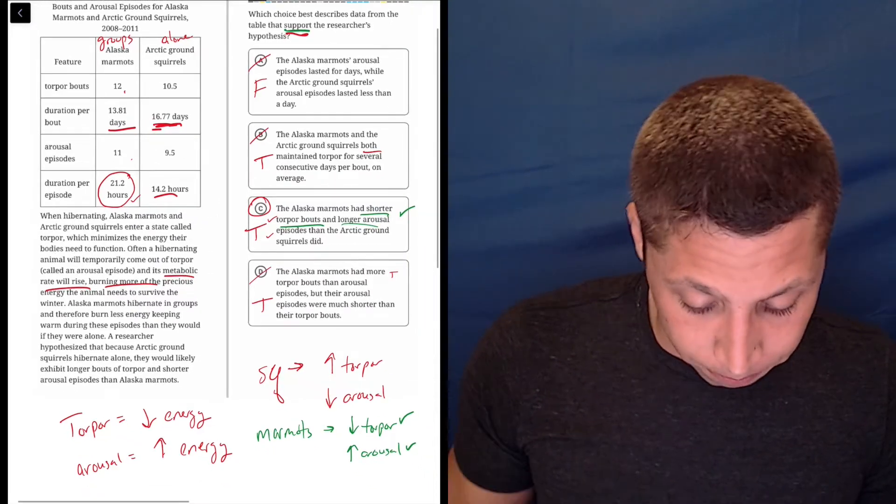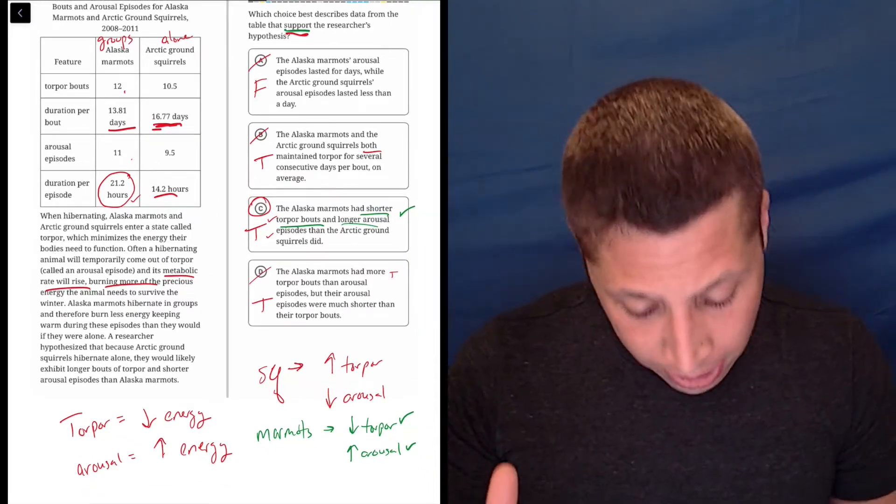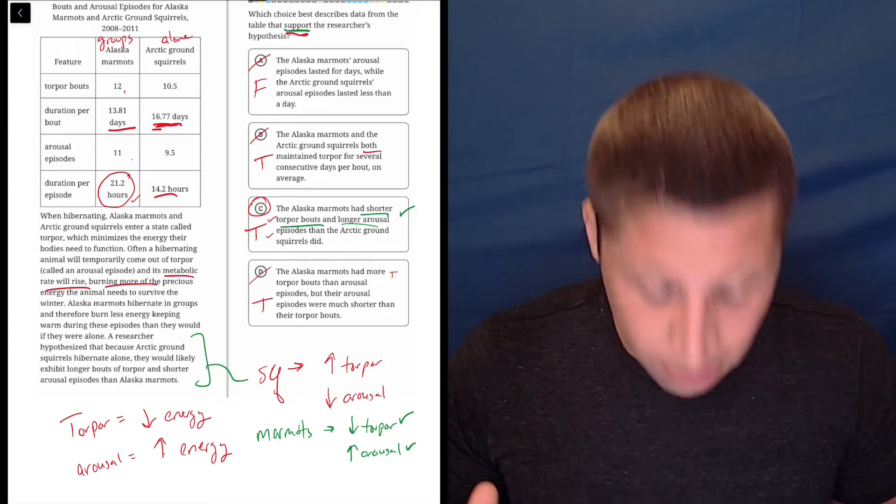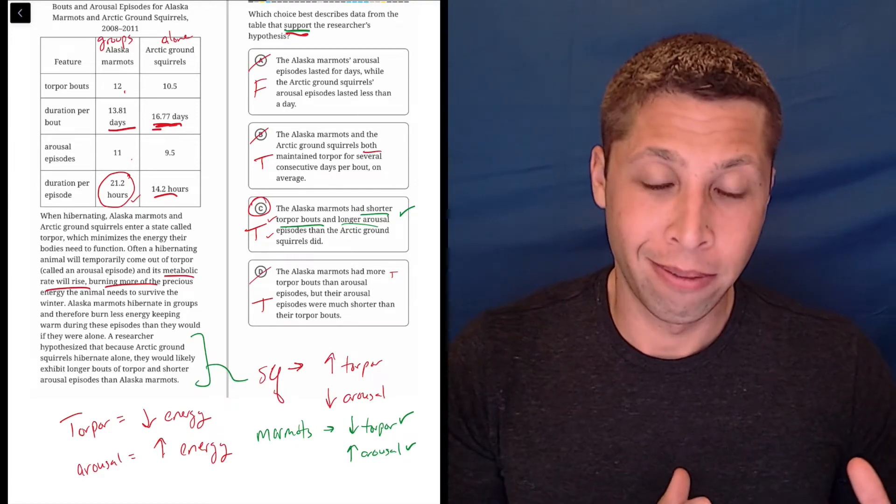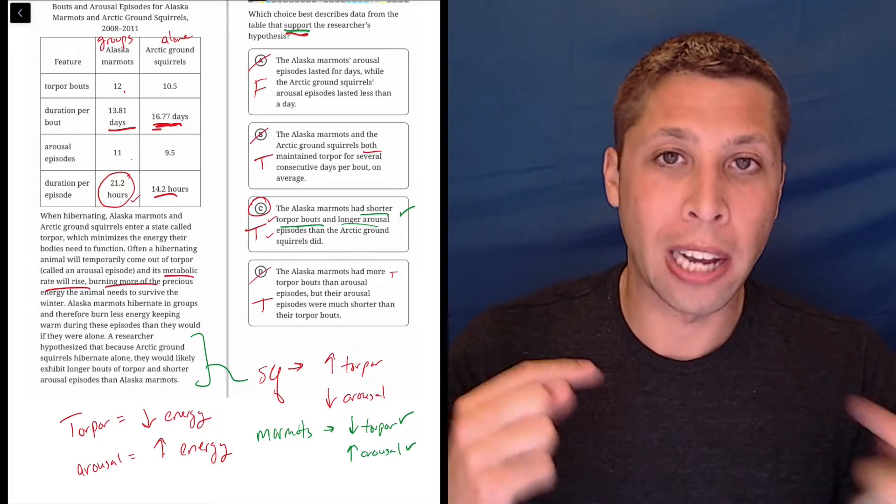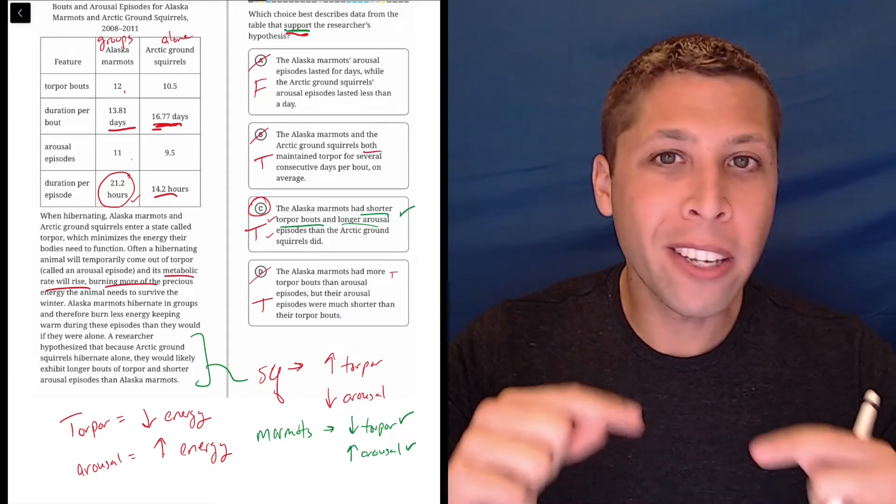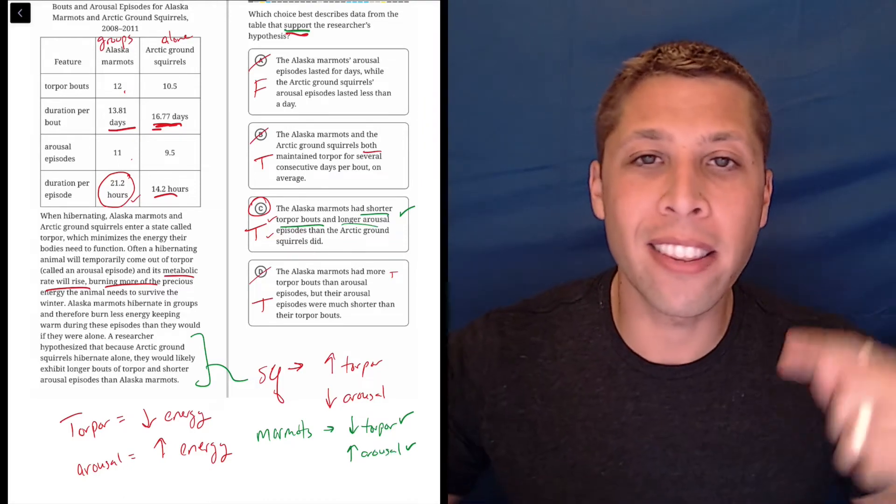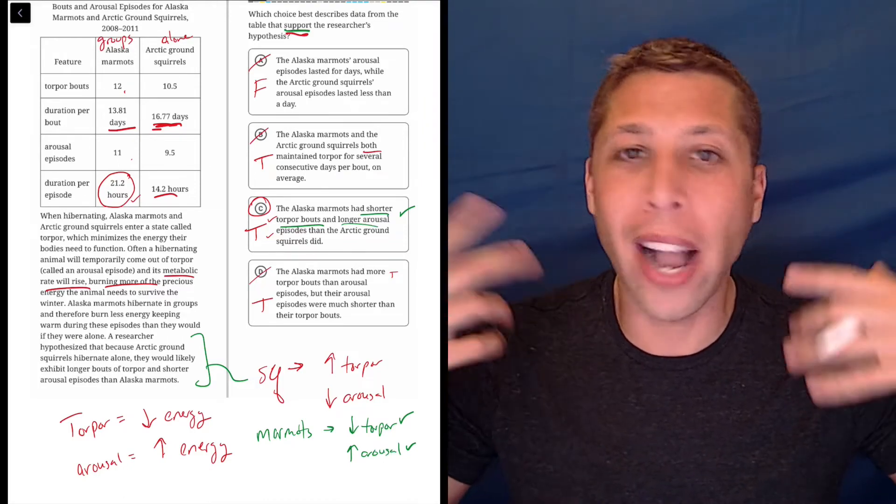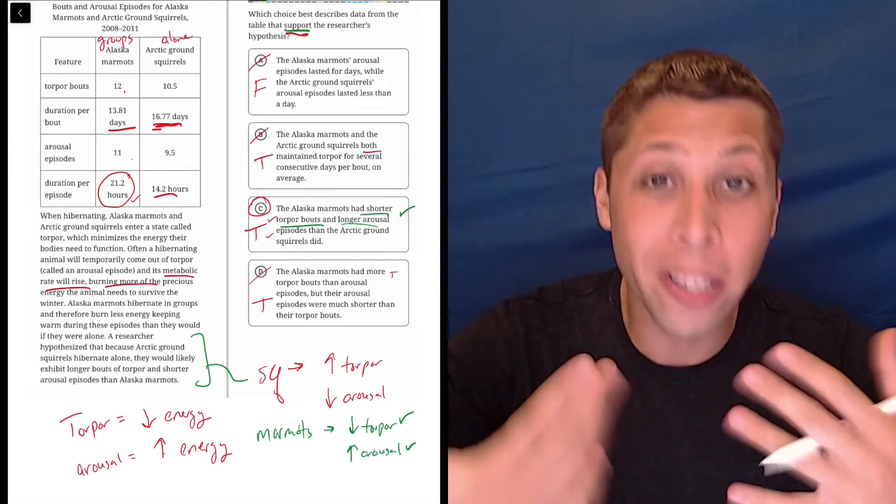Now look at what the SAT did here. The lines gave us something about the squirrel, but the question was flipping it and talking about the marmot. But it doesn't take a scientist to understand that if we're talking about different things, the arrows are going to go in different directions, right? So I didn't have to think too hard about this. They're showing that there's a contrast.